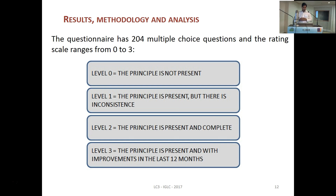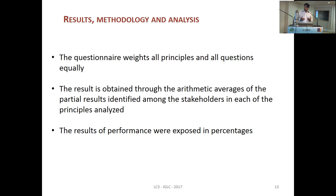The questionnaire has 204 multiple choice questions, and the rating scale ranges from 0 to 3. Level 0 means the principle is not present. Level 1 means the principle is present but there is some inconsistency. Level 2 means the principle is present and complete. Level 3 means the principle is present and has seen improvements in the last 12 months. The questionnaire weights all principles and all questions equally, and the result is obtained through the arithmetic average of the scores identified among the stakeholders in each of the principles analyzed. The result is expressed as a performance percentage.